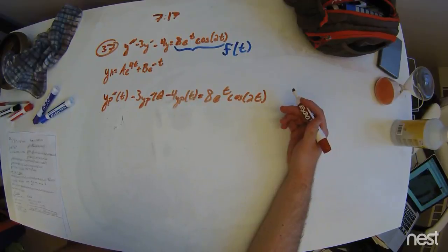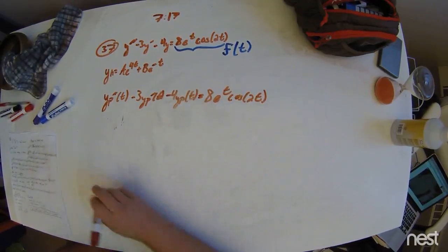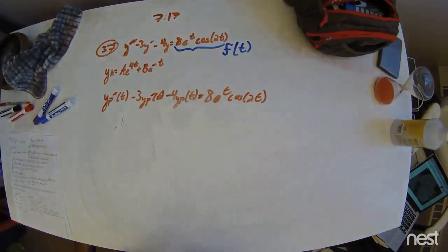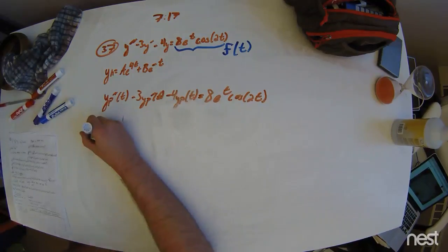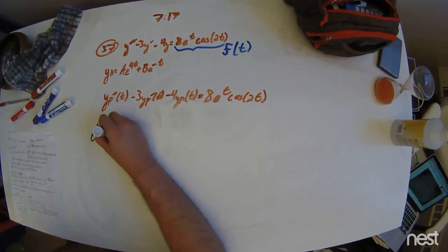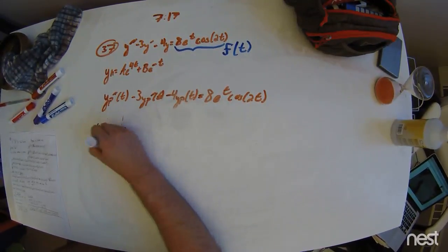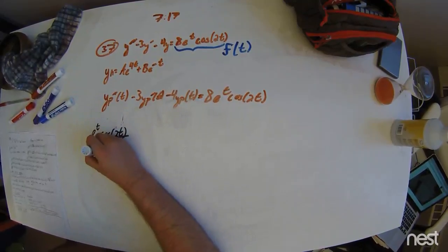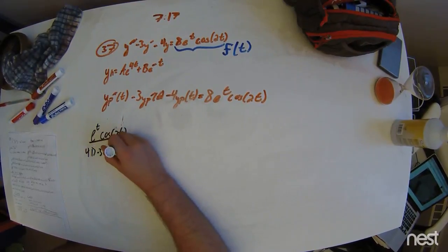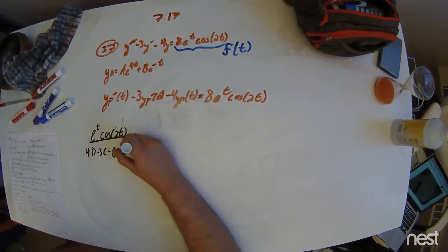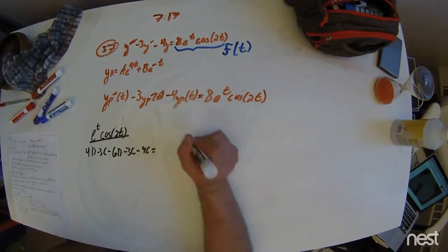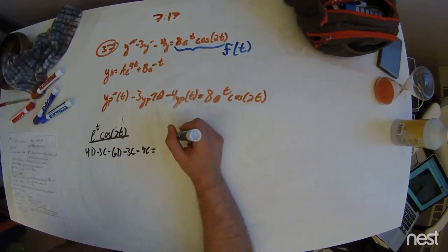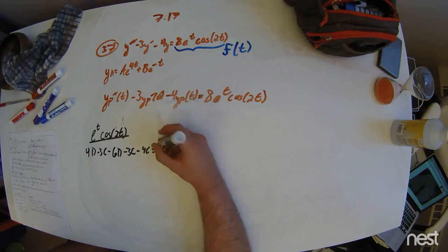In the end, you get simply that our e to the t cosine of 2t expression can be written as such. After a bunch of grouping, you get a lot of math. This eventually turns out to be like this.